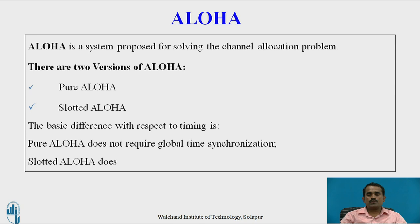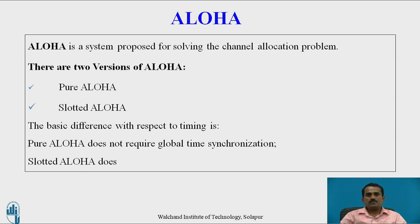Now we move to the next topic: Aloha. In 1970, a scientist named Abraham and his colleagues found a new and elegant method called Aloha, used for solving the channel allocation problem. There are two versions of Aloha: Pure Aloha and Slotted Aloha. The basic difference with respect to timing is that Pure Aloha does not require global time synchronization, while Slotted Aloha requires global time synchronization.